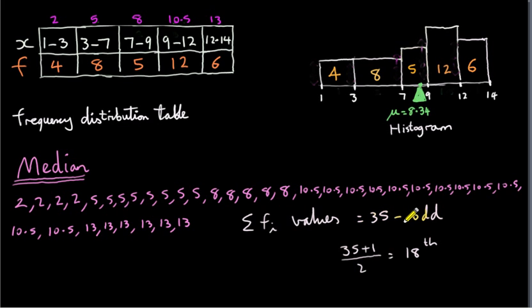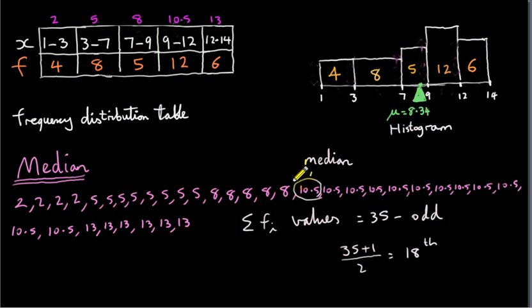Counting along: the first four values are 2s, then we add eight 5s (positions 5–12), then five 8s (positions 13–17). The 18th value falls in the 10.5 group. So the median is 10.5. There are 17 values below this median and 17 values above it. To get the median from our histogram, we use the fact that the median bisects the area of the histogram — we find the value of x that halves the total area.